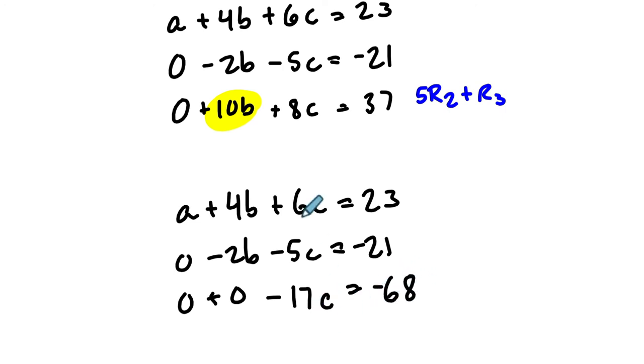Now here, what have we done? We've essentially restructured it. So now we know the value of C. We can solve for that. So C, I believe, is 4. Right? Negative 68 divided by negative 17 is 4.